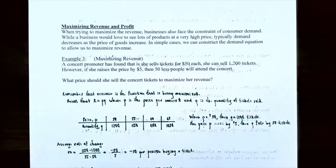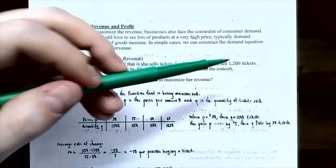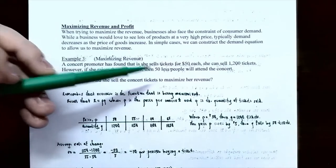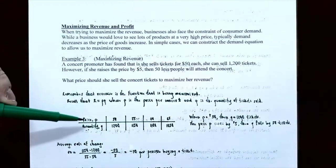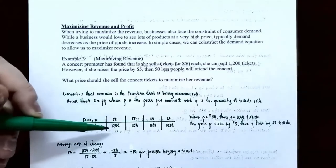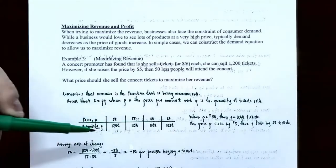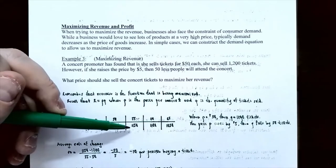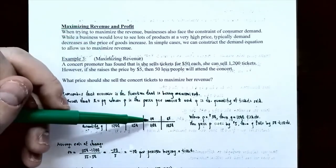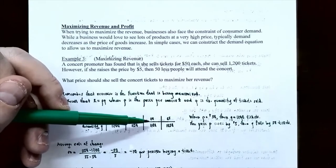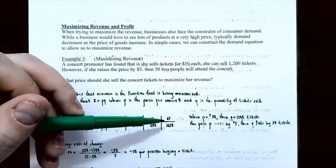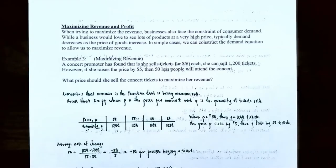If the tickets are $50 each, it's 1,200 tickets sold. And if you increase the price by $5, 50 fewer people will attend. So let's make a table of values. At a price P of $50 per ticket, 1,200 people will attend — that's the quantity Q. If you increase the price to $55, then 50 fewer people will attend: that's 1,150. If you increase the price again to $60, another 50 fewer people will attend, so you're down to 1,100. And if you increase the price to $65, then another 50 fewer people will attend, so now you're down to 1,050.